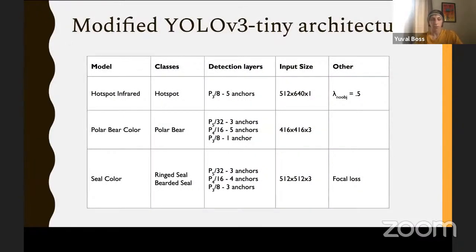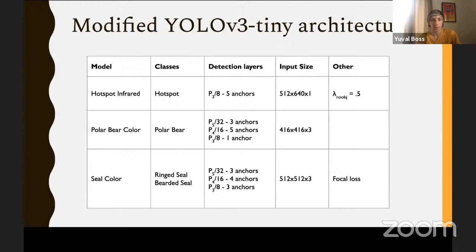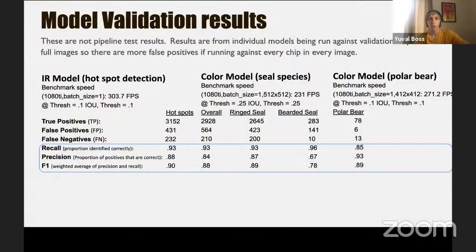The final set of models in our late fusion pipeline: an infrared hotspot model with just one detection layer at the infrared input size, with the false-positive regularizer reduced to 0.5. A color polar bear model with three detection layers. A seal color model also with three layers, using focal loss as I discussed for class imbalance. These models are evaluated separately — model evaluation is different from evaluating the full pipeline.